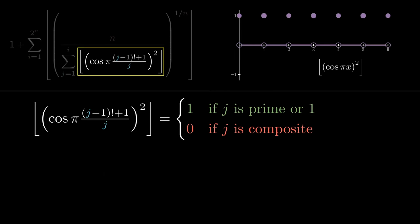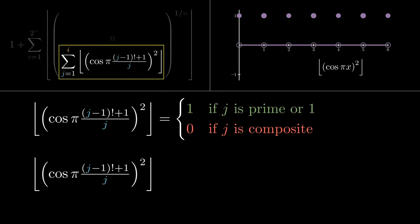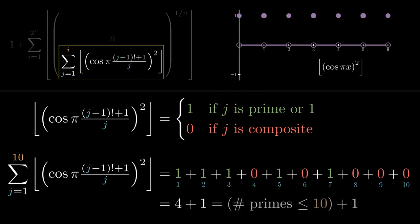With this prime detector, we can start counting primes by summing over a range of values for j. For concreteness, here's the sum when i is 10. j takes each value from 1 to 10. And the detector contributes a 1 to the sum every time j is prime or 1. There are 4 primes in this range, so the sum is 5. In other words, this is the number of primes up through 10 plus 1.